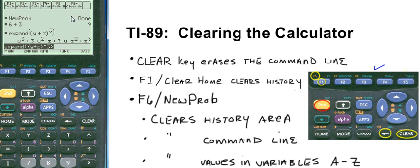This upper region is called the history area. It contains past commands and their outputs. We will also clear this.